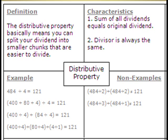Some characteristics, and if you look down at the example you can see, it says the sum of all dividends equals the original dividend. In the example, you have 484 divided by 4 equals 121. Below that, you can see where they split up the dividend, and it's 400 plus 80 plus 4 divided by 4 equals 121. So being able to split it up, but the sum of all those dividends have to equal the original, which was 484. Now the second thing is the divisor always has to remain the same, divisor being the number we're dividing by, which in this case is number 4.